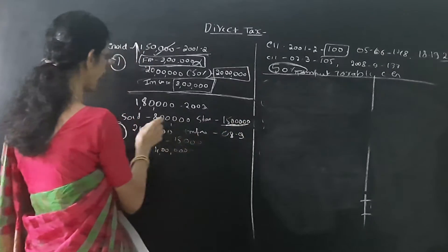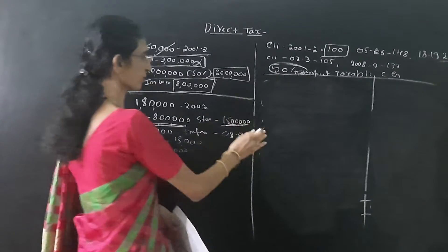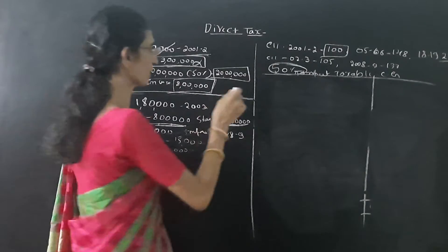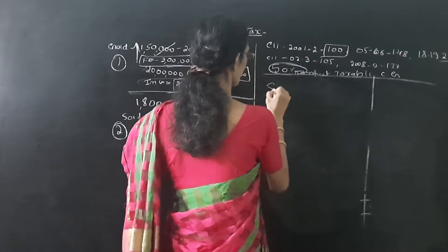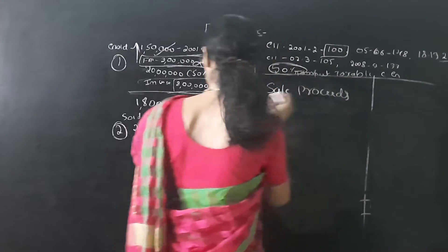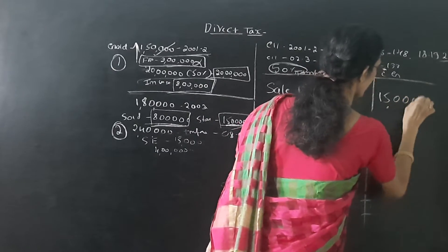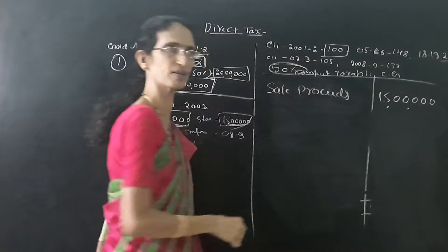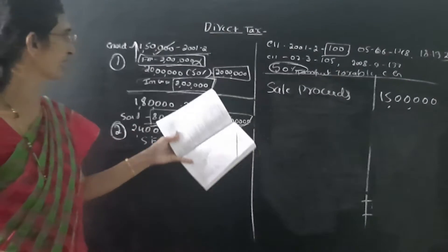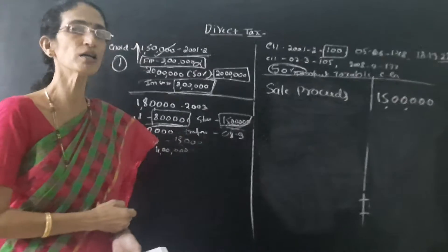See here, your stamp value and sold value is given. Stamp value is more. So we have to take the stamp value, actual valuation value. Here we have to write sale proceeds. Remember, don't take 8,00,000. We have to take the valuation. Valuation of that house is 50,00,000. This is the special adjustment in this problem.